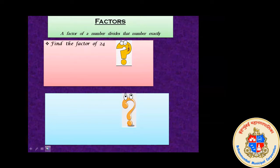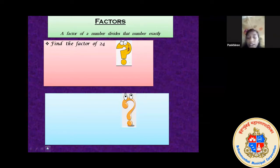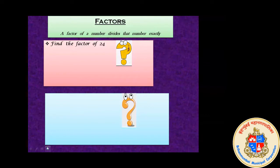The first sum we are going to see: find the factors of 24. Here we are going to find what are the factors of 24. Can anyone tell me — 24 is divided by which all numbers? We will go in ascending order, starting from 1. By which all numbers is 24 divisible? Starting with 1: 1 times 24 is 24.